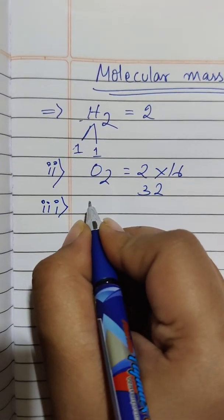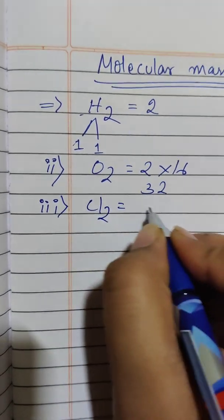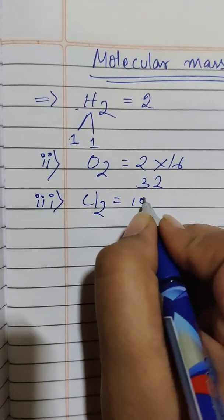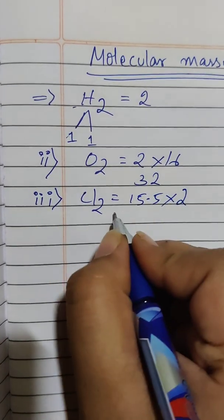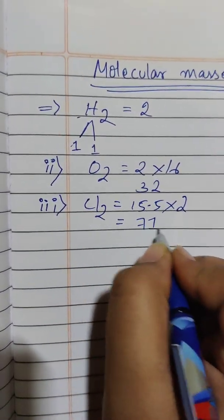Third, Cl2, chlorine. Fifty-five point five into two. Seventy-one.